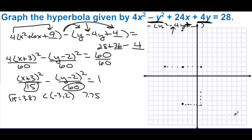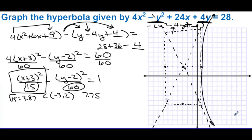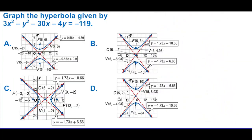We draw the rectangle through all four points so we can draw the asymptotes. Since x is first in the equation, this is a horizontal hyperbola going right and left.